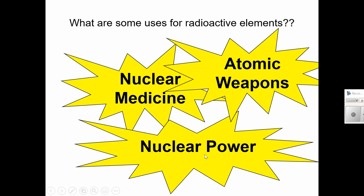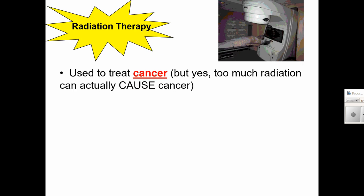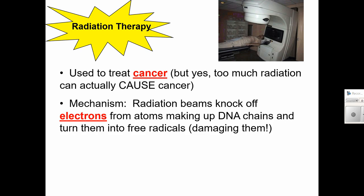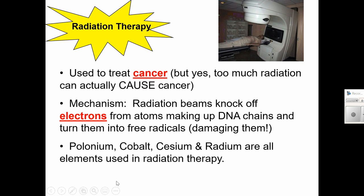What are some uses for radioactive elements? We're going to talk about nuclear medicine, nuclear power, and atomic weapons. So nuclear medicine, you probably have heard about people having cancer going to radiation therapy. So yes, too much radiation can cause cancer, but you can also use a mechanism where radiation beams knock electrons off of atoms in the DNA chains and turn them into free radicals, which damages them. So here are some elements that are commonly used in radiation therapy. And again, they can target those beams to the cancerous cells, but they also kill healthy cells, too, which is why people undergoing radiation often don't feel very well, and they lose their hair and other side effects.